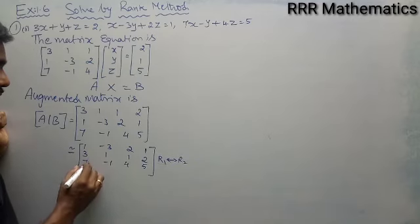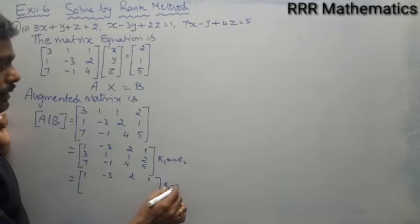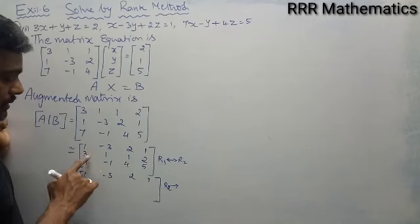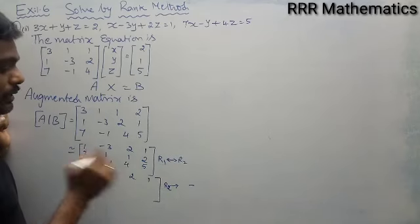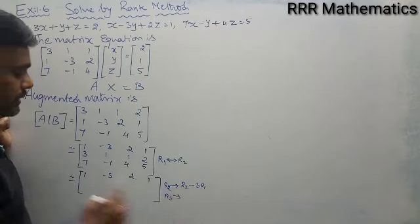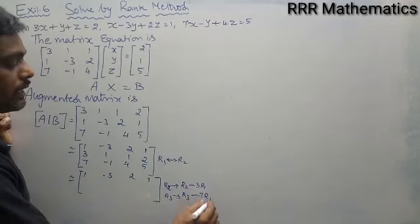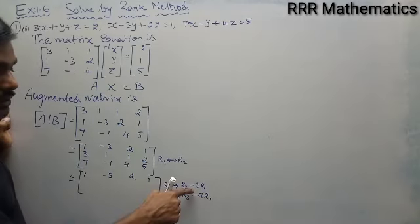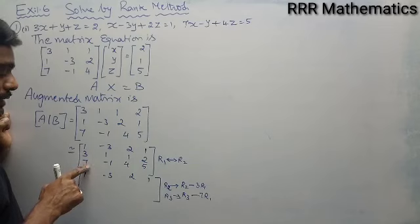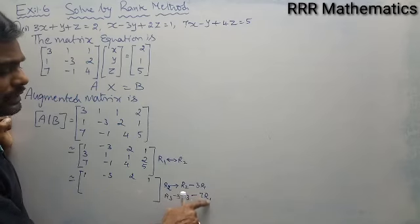Next, I want to bring zeros in the first column below the pivot by using R1. For the second row, since the signs are the same, I subtract: R2 → R2 - 3×R1. For the third row, I have 7 in the first column, so I apply R3 → R3 - 7×R1. Multiplying R1 by 3 gives 3 in the first position; subtracting yields 0. Similarly, multiplying R1 by 7 and subtracting will give 0 in that position.